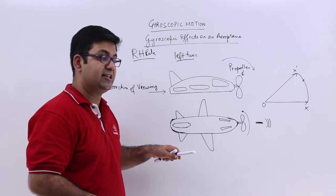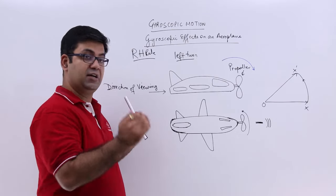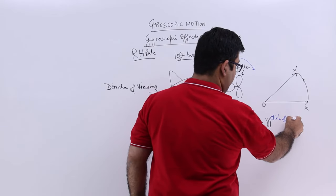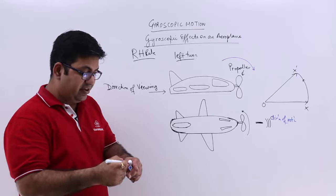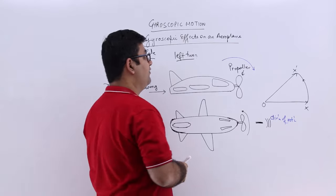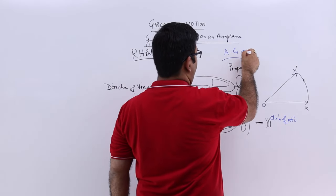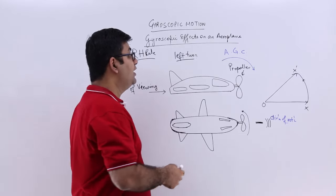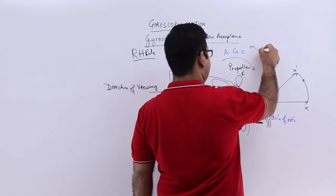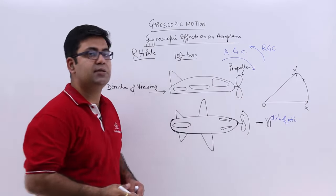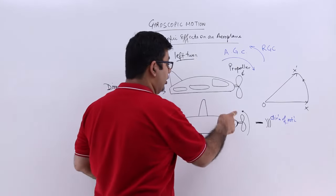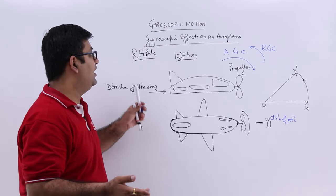So when you start off looking at the propeller from the rear end, the curl of the fingers gives the direction of rotation. And when we change the axis to the precessional motion, the curl of the fingers now gives us the active gyroscopic couple. This means that the reactive gyroscopic couple would be the opposite of it. So the conclusion is: when viewing the aircraft from the rear end with the propeller rotating counter-clockwise and the aeroplane takes a left turn,